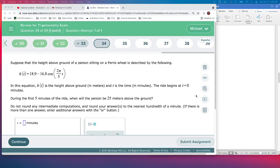Question 34. So this one looks pretty involved, but we're given an equation here. It's a placement of a person on a Ferris wheel described by this. H is going to be the height above the ground. T is the time in minutes. And the ride begins at T zero.